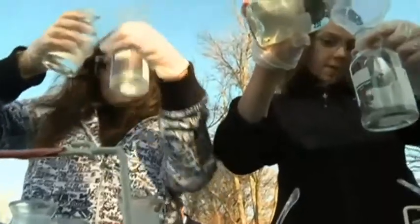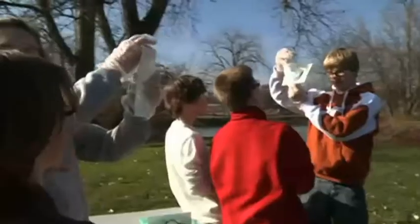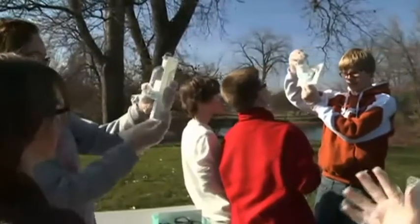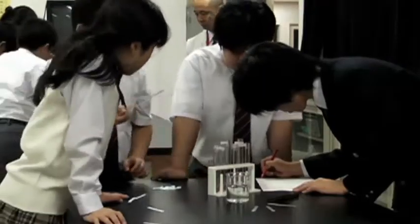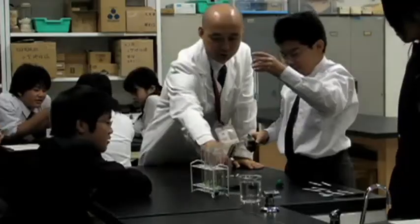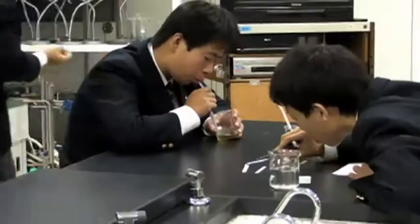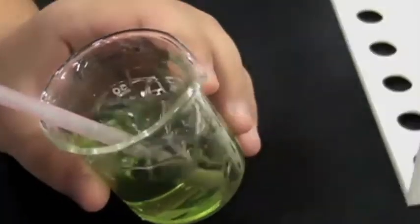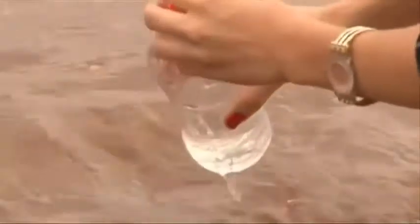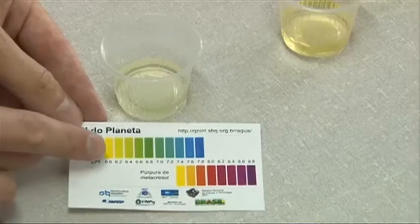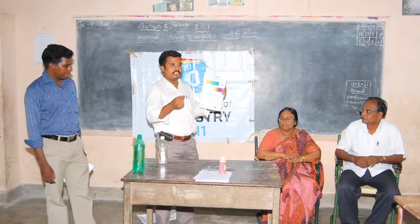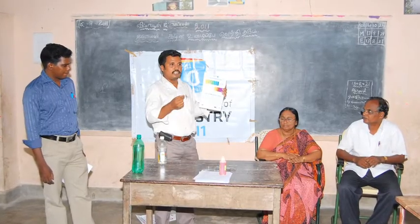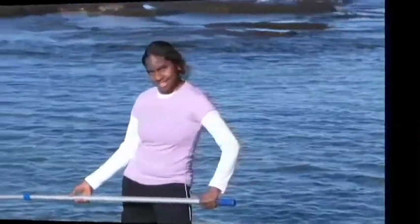For the experiment to be truly global, it was vital that the tests involved were inexpensive and simple to understand and carry out, and so we decided on four activities that covered measuring water quality and the processes of water purification. These were the tests. Acidity: students would collect data by measuring the pH of a local water body or source.